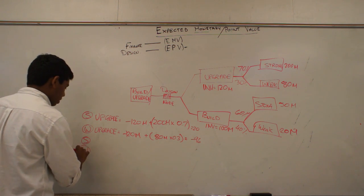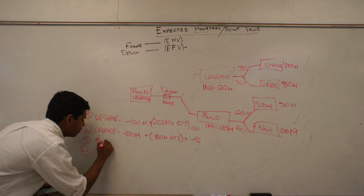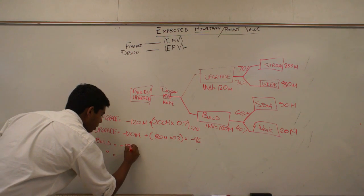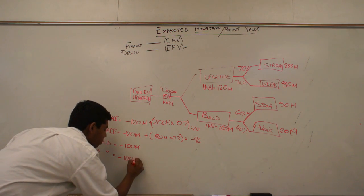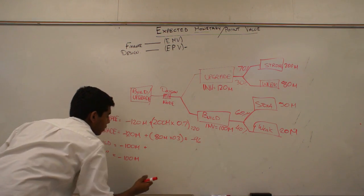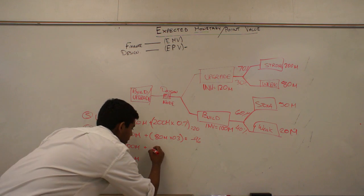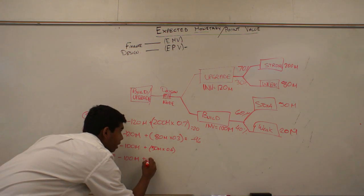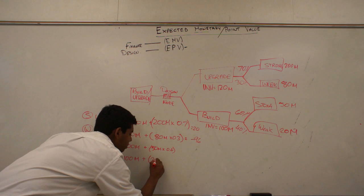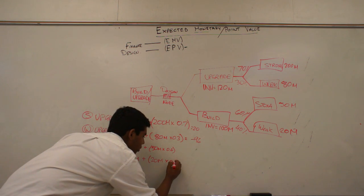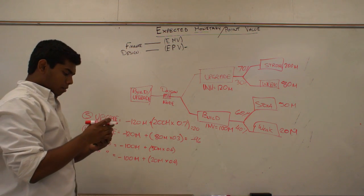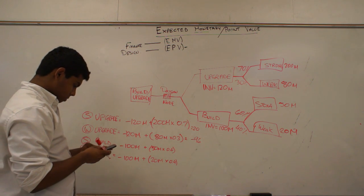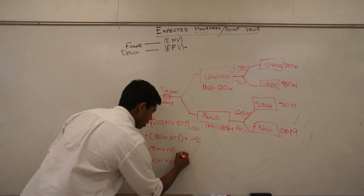And if we look at the other scenarios, where we have a strong and weak and we have build. Same thing here. We have minus $100 million. And in this case, we have a 60% chance of having a strong market with a return on investment of $50 million. So that's $50 million times 0.6. And you have a chance of $20 million return on investment with a chance of 0.4. Or you have minus $70 and you have minus $92.